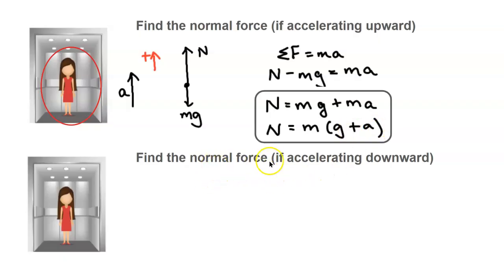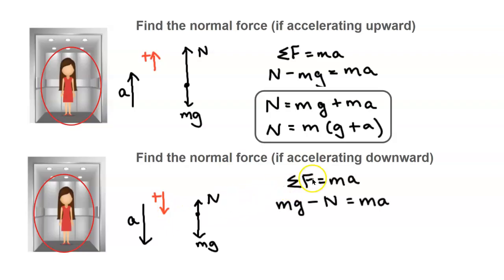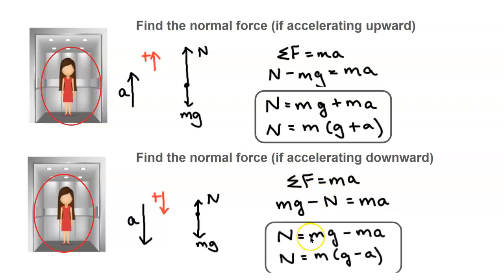Now let's look at the normal force when accelerating downward. Making down positive and applying Newton's second law: mg minus n equals ma. Solving for n: n equals mg minus ma, or n equals m(g minus a). When accelerating upward, her normal force is mg plus ma — greater than her weight — so she feels heavier. When accelerating downward, her normal force is mg minus ma, so she feels lighter. This is consistent with our everyday experiences in an elevator.